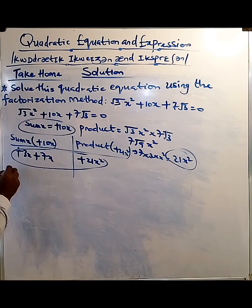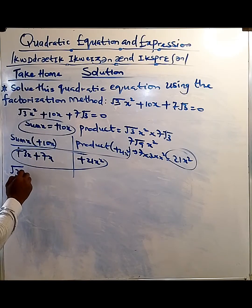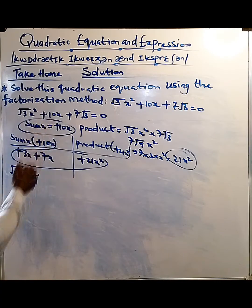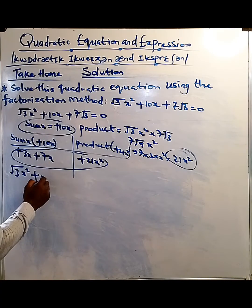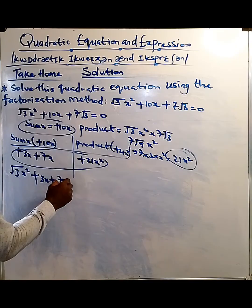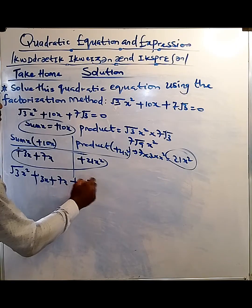We'll come back to the very question. √3x² plus, it's rewriting, +10x. We're going to write 3x + 7x, then +7√3.